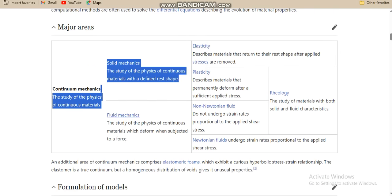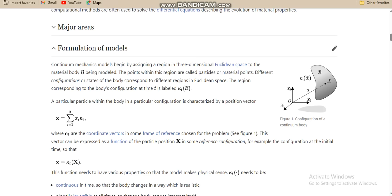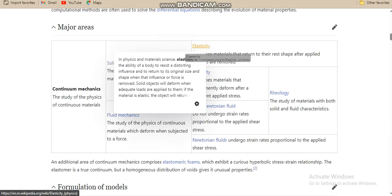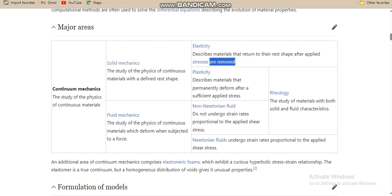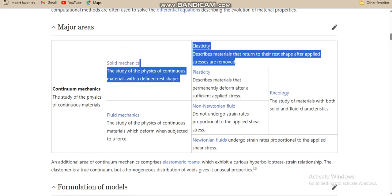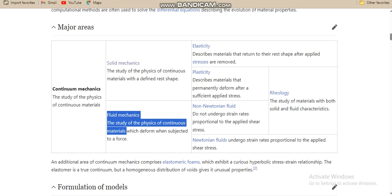Solid mechanics and fluid mechanics. Next, we find major properties. Elasticity describes materials that will return to their original state after applied stress is removed. Plasticity occurs after applied stress. Fluid mechanics studies the physics of continuous materials that have been subjected to a force.